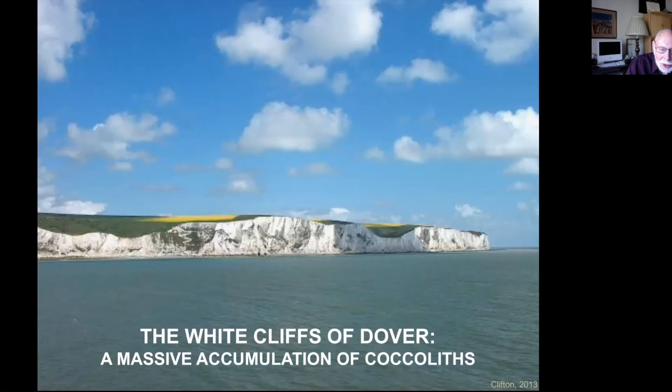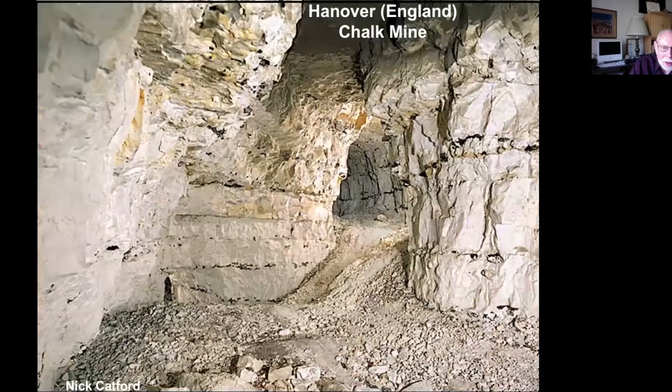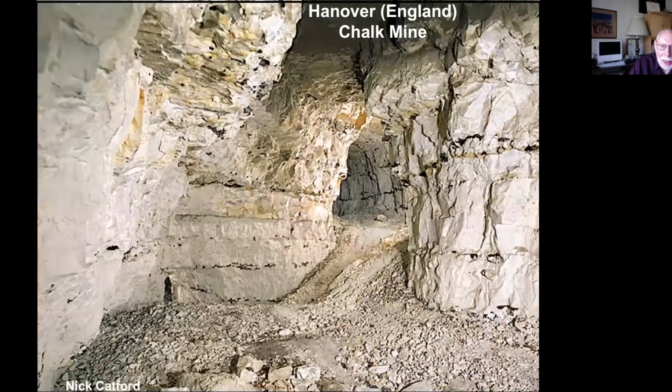Coccoliths accumulate on the seafloor in great numbers, and eventually, if enough pile up, they make chalk. The cliffs of Dover are nothing more than a massive accumulation of coccoliths. The Great Pyramids of Giza are taken as a standard of human antiquity at 3600 BC, but tens of thousands of years earlier, humans were using chalk as a pigment in cave paintings. Today all the chalk used on blackboards is made of gypsum — something entirely different, still called chalk.